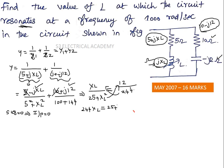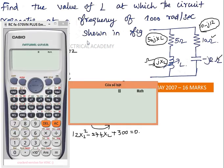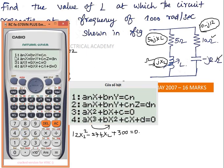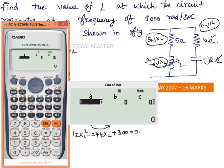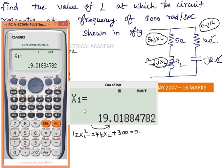Cross multiplying: 244·XL = 12·(25 + XL²), which gives 244·XL = 300 + 12·XL². Rearranging: 12·XL² - 244·XL + 300 = 0. This is a quadratic equation. Using the calculator's equation mode with a = 12, b = -244, c = 300, the roots are XL = 19.01 or XL = 1.314.